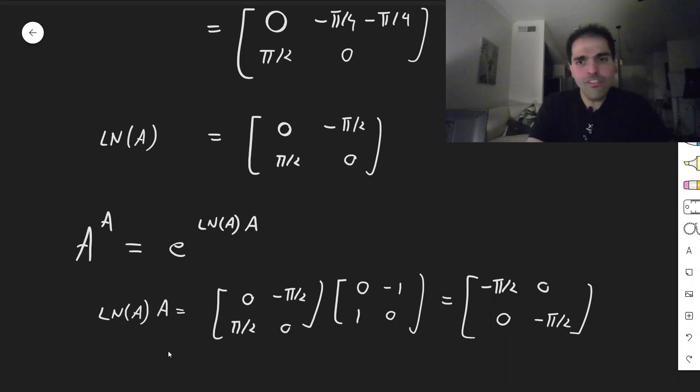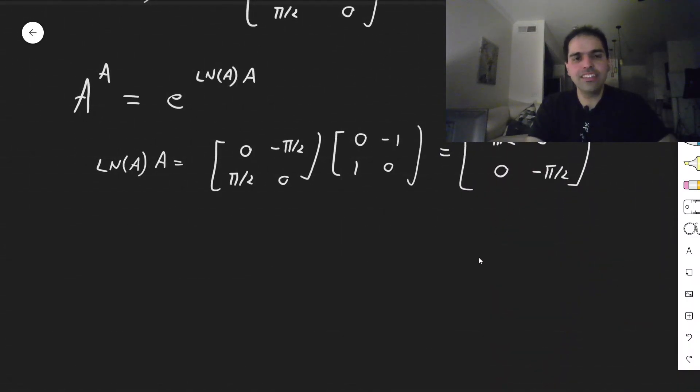So that is ln of A to the A, and the nice thing is, this is diagonal, so E of ln of A to the A, it just becomes E to the minus pi over 2, 0, 0, E to the minus pi over 2.